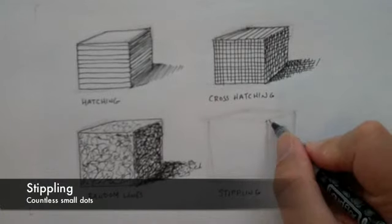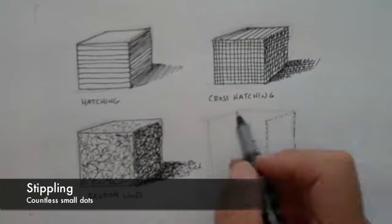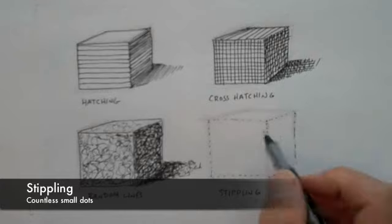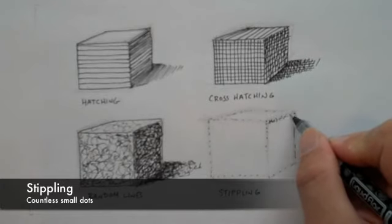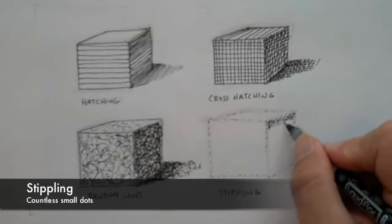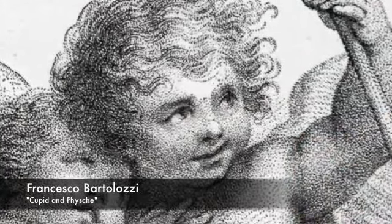The last technique I'm going to share with you is called stippling. Stippling is where you make a lot of small dots. And the closer you put those dots together, the darker the value gets. Obviously stippling takes a little bit longer to do. Here's an example from Francesco Bartolozzi using stippling.